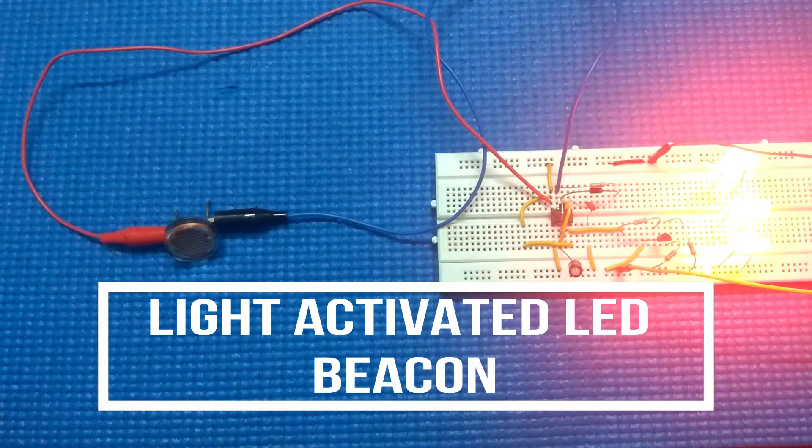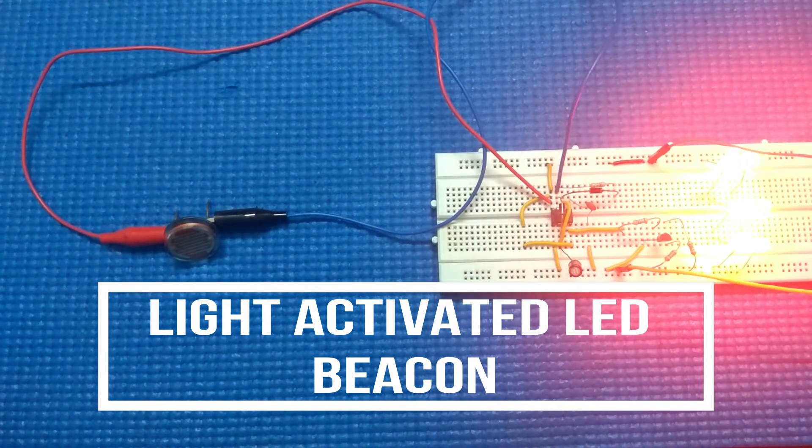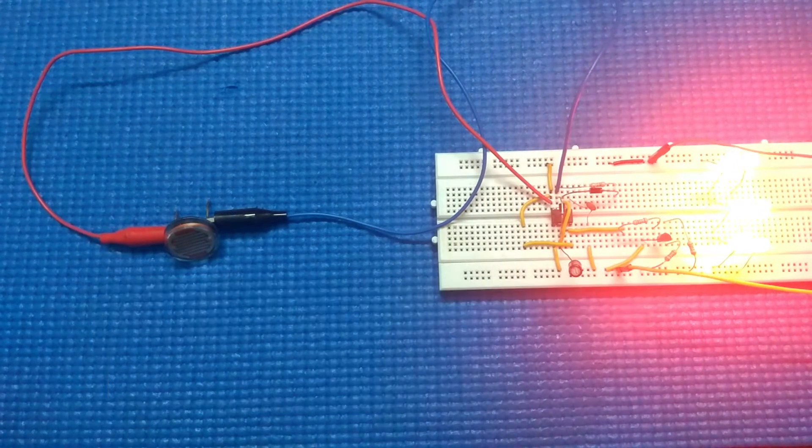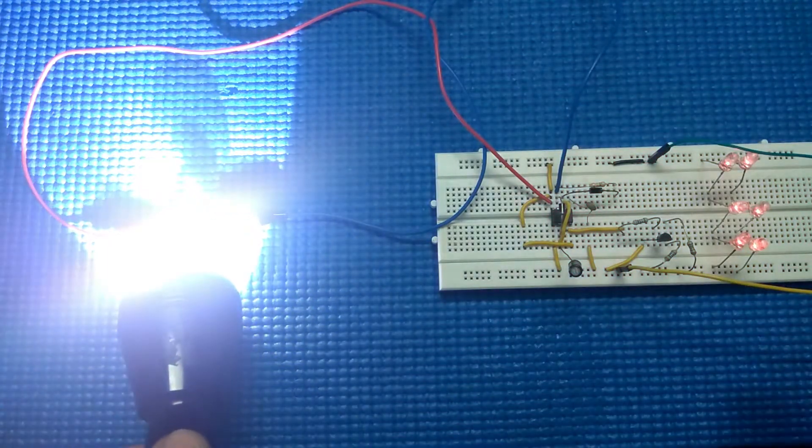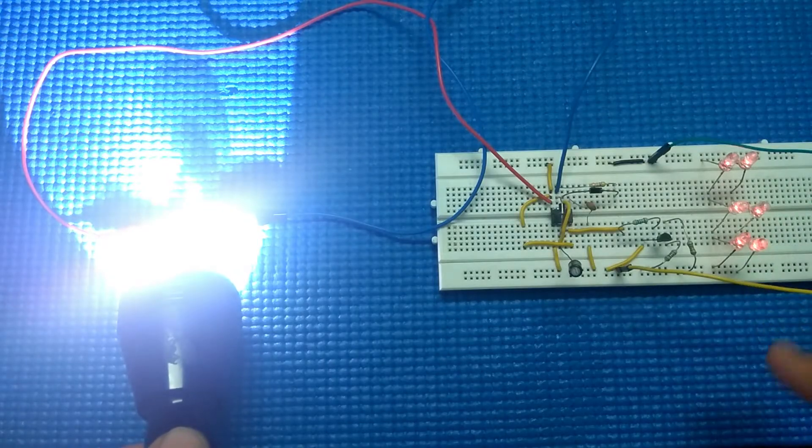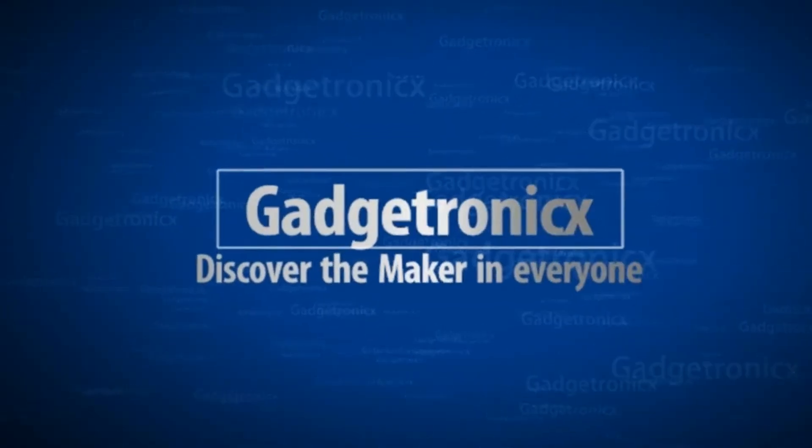Hi everybody, in this video tutorial we are going to see how to build a light sensitive LED beacon. This LED beacon will glow brighter when the intensity of light is less and it will dim when intensity is more. I am Frank Donald from Gadgetronics, let's get this project started.